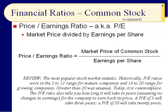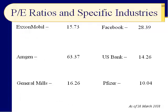The higher the PE, the more investors are expecting the future to be great for that company. The lower the PE, the fewer expectations investors have. Slide ten: here we have six companies with nothing to do with one another, and look at their PEs as of March 28, 2018 — they're all over the map. Exxon and General Mills are about average, US Bank is a little below average, but Amgen is way above average, Pfizer is way below, and Facebook is actually lower than it was just a few weeks ago.